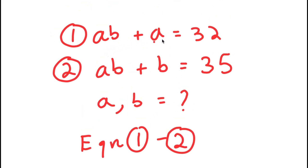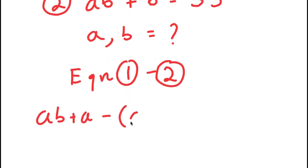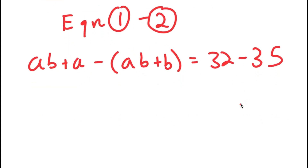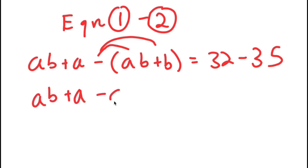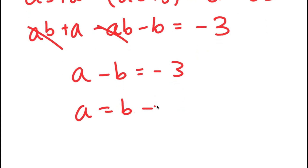Equation one is AB plus A equals 32. So I have AB plus A minus (AB plus B) is equal to 32 minus 35. Distributing the negative sign, I get AB plus A minus AB minus B equals negative three. Now I can cancel out AB and negative AB, so I'm left with A minus B is equal to negative three, meaning A is equal to B minus three.